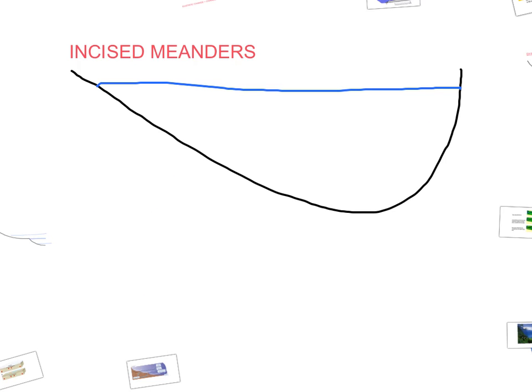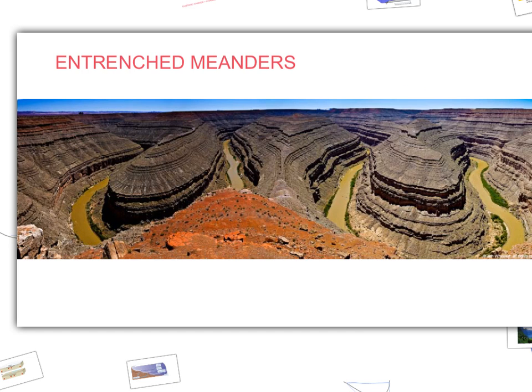If a rejuvenated river is in a valley with well-developed meanders, renewed downcutting results in them becoming deepened. These are called incised meanders. If this deepening occurs quickly, the valley may become symmetrical with steep sides and a gorge-like appearance. This is known as an entrenched meander.